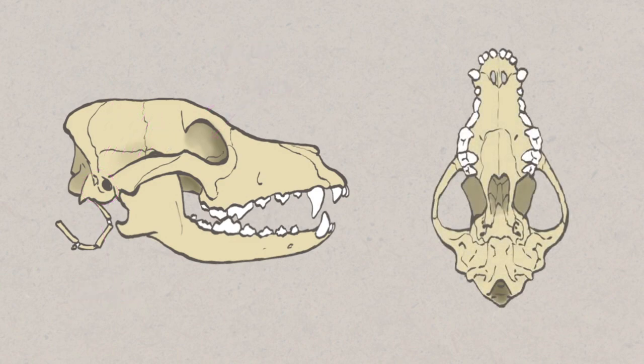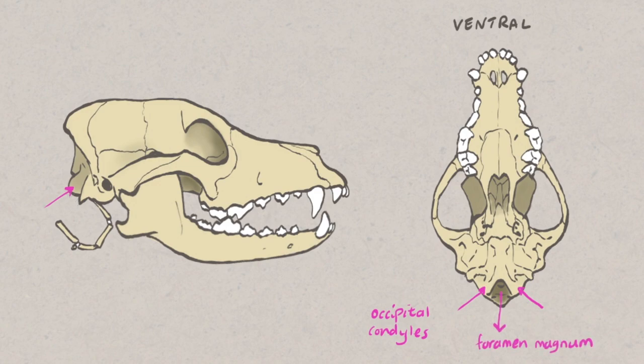As seen on this ventral view, the occipital region articulates with the first cervical vertebra of the spine by the occipital condyles and the spinal cord exits at this point through the foramen magnum.